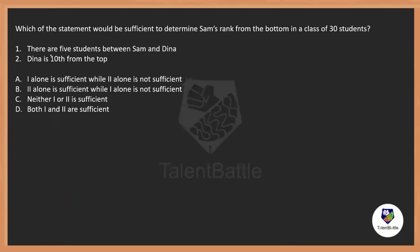Moving on to the next question from data sufficiency. There are five data sufficiency questions in the test. The question asks: which of the statements would be sufficient to determine Sam's rank from the bottom in a class of 30 students? The biggest advantage in data sufficiency questions is you need not give the actual value — you just need to determine whether you can answer the question or not.